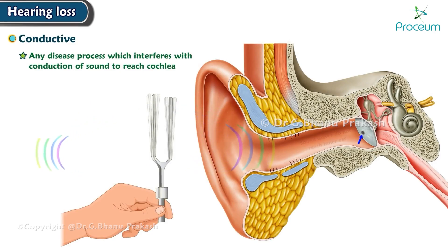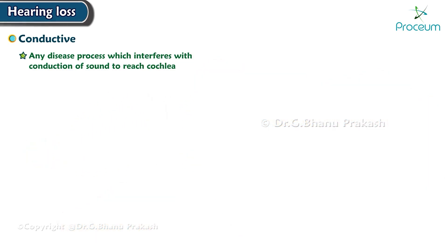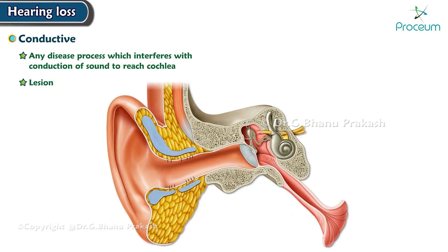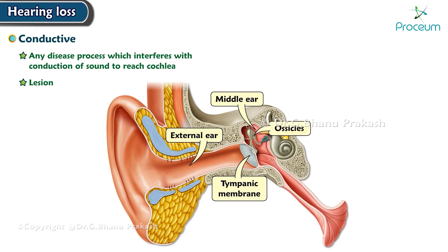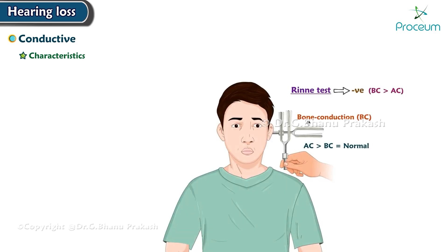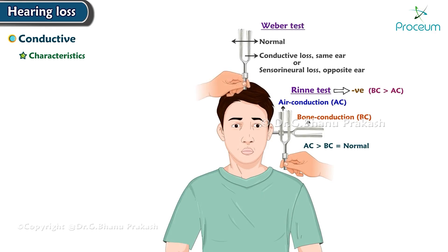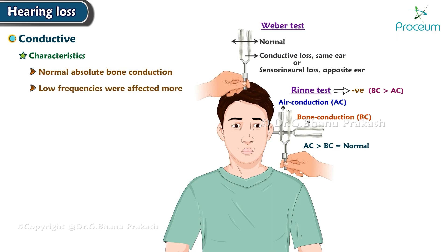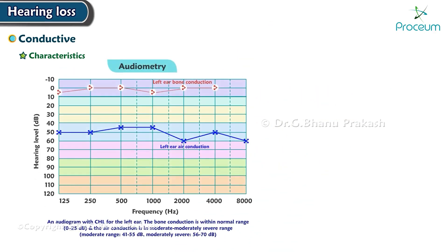Any disease process which interferes with the conduction of sound to reach the cochlea causes conductive hearing loss. The lesion may lie at any site such as the external ear, tympanic membrane, middle ear, or up to the stapedial vestibular joint. The characteristics of conductive hearing loss include a negative Rinne test — that is, bone conduction greater than air conduction — and Weber lateralized to the poor ear, with normal absolute bone conduction. Low frequencies are affected more.